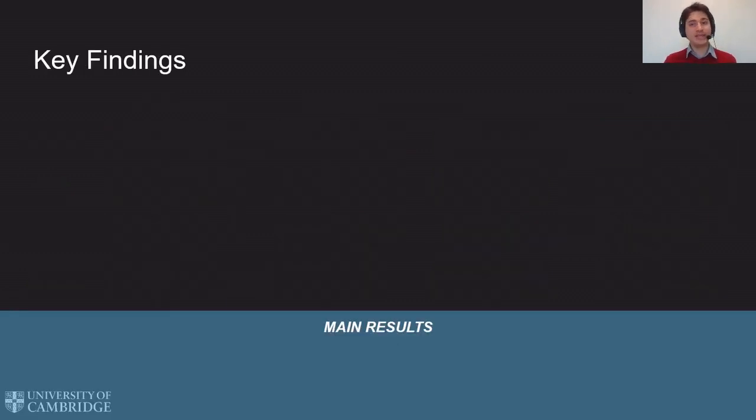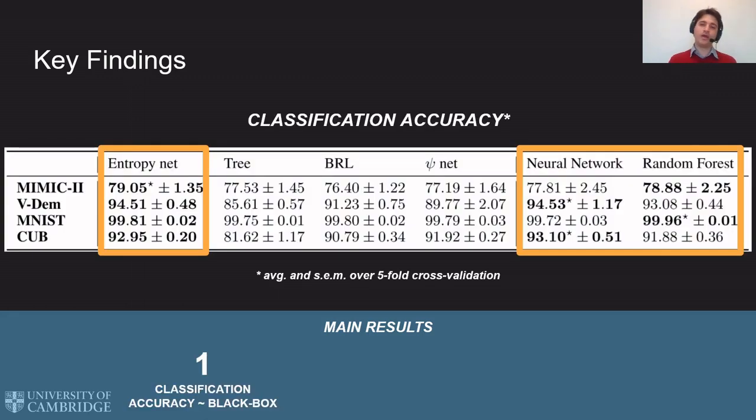We compared ELENs to state-of-the-art white boxes and black boxes, and we identified three main findings. First, ELEN's classification accuracy matches the accuracy of black boxes like an equivalent feed-forward neural network or a random forest.